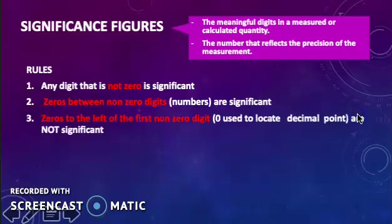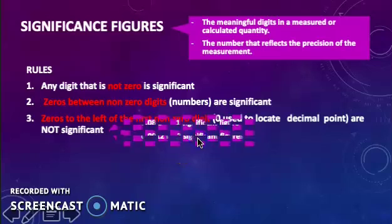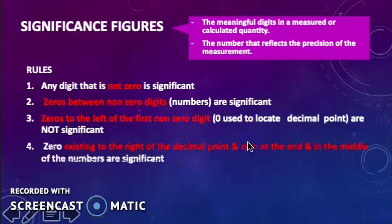Rule number 3, zeros to the left of the first non-zero digit are not significant. For example, 0.8 liter has 1 significant figure, and 0.0012 liter has 2 significant figures. Rule number 4,